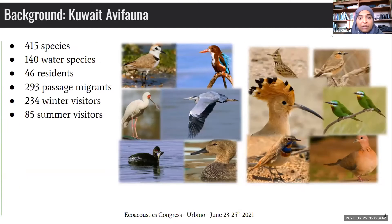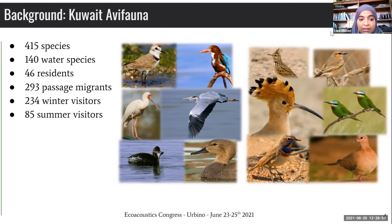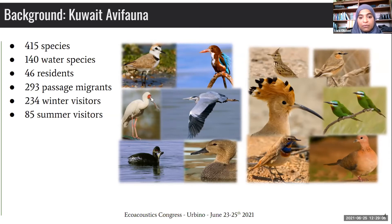Kuwait is very rich in avifauna. We have around 415 species, 140 water species, 46 residents, nearly 300 passage migrants, 284 winter visitors, and 85 summer visitors. And we can see some of the inland desert birds and some of the water birds.